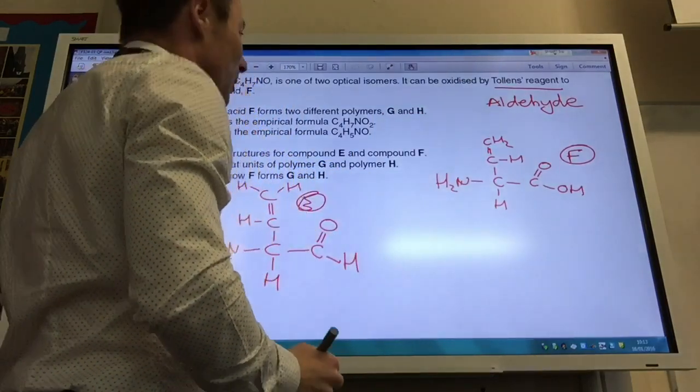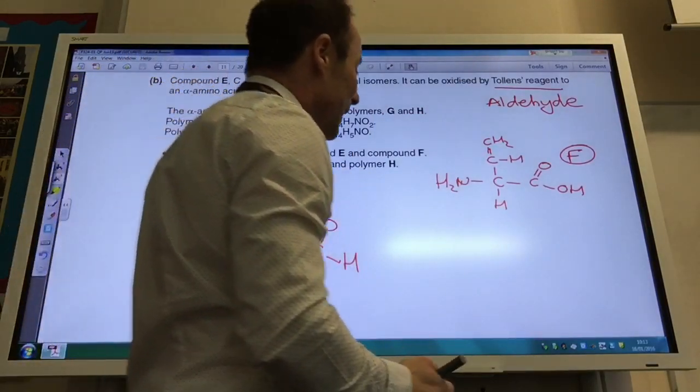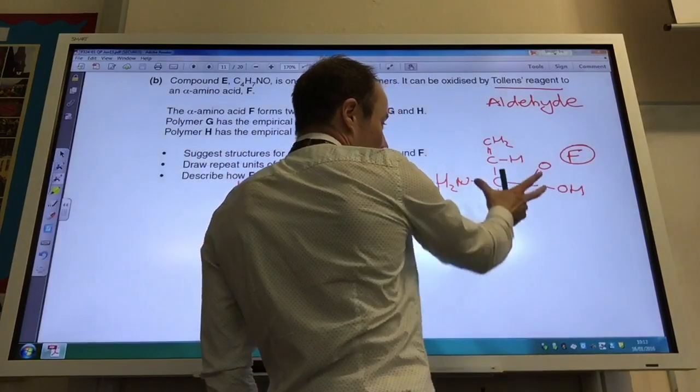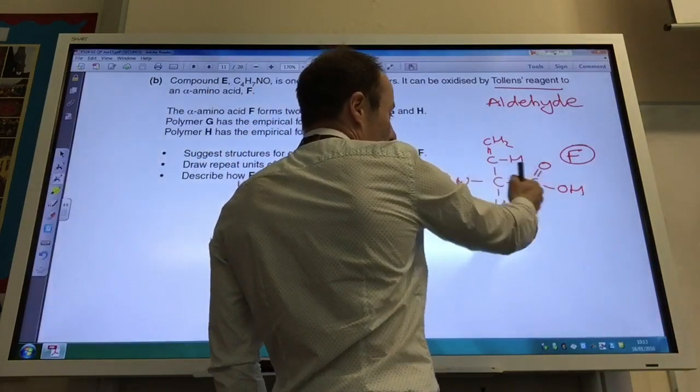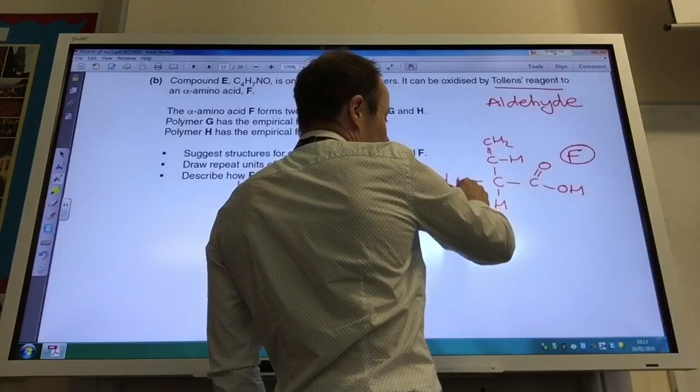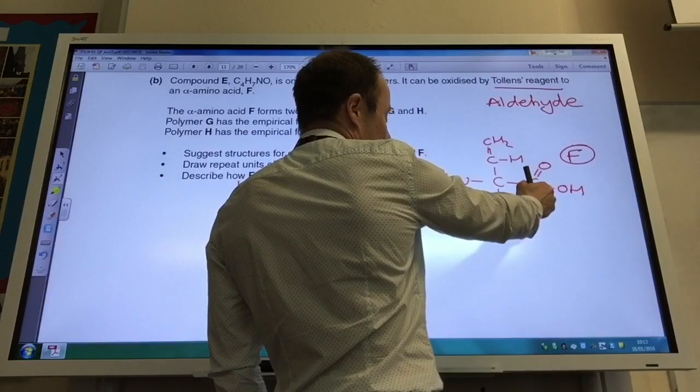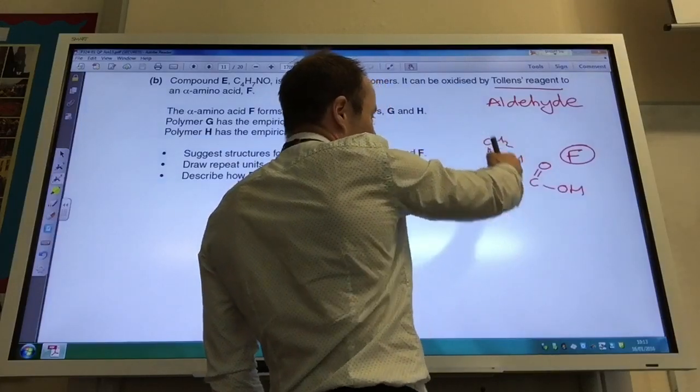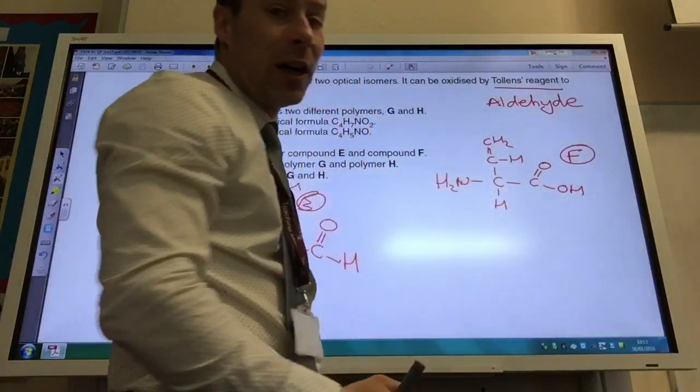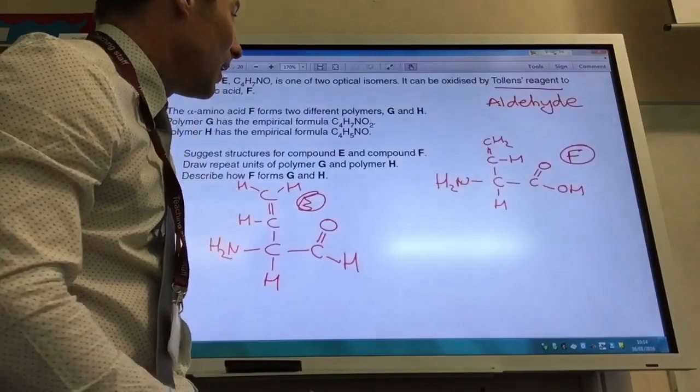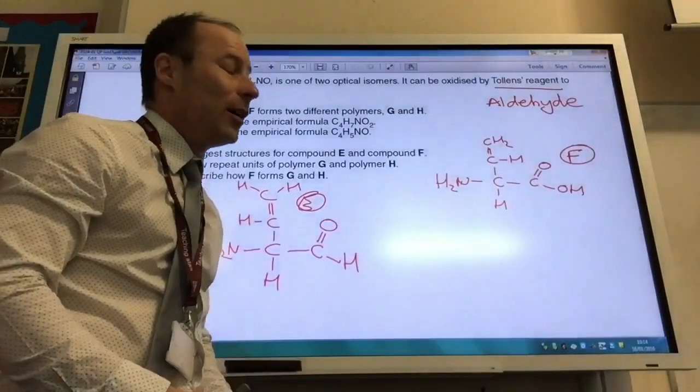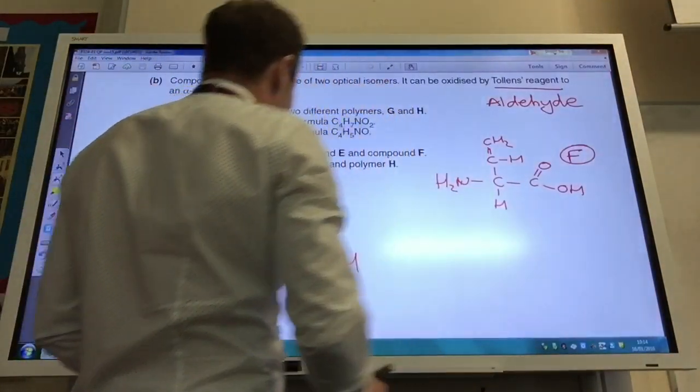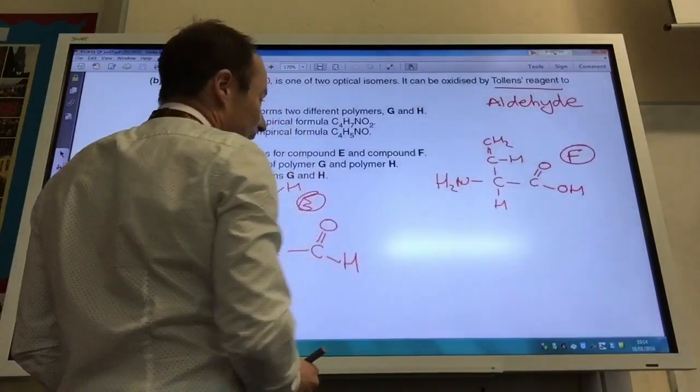I now need to do my polymers. Well, hopefully you can see that I can form two different polymers. One will be a condensation polymer because I've got an amine group there and acid there. So that can form a condensation polymer. The other one is because I've got a carbon-carbon double bond there, I can make an addition polymer as well.